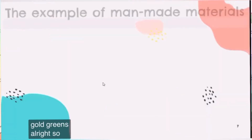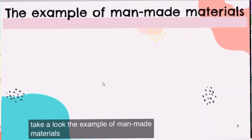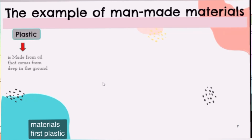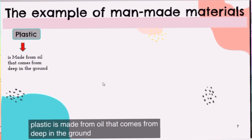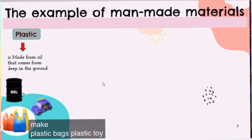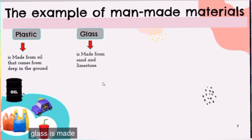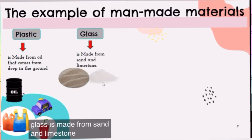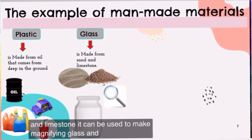Now let's take a look at examples of man-made materials. First, plastic — plastic is made from oil that comes from deep in the ground. It can be used to make plastic bags, plastic toys, plastic cups, and straws. Next, glass — glass is made from sand and limestone, and it can be used to make magnifying glasses and glass jars.